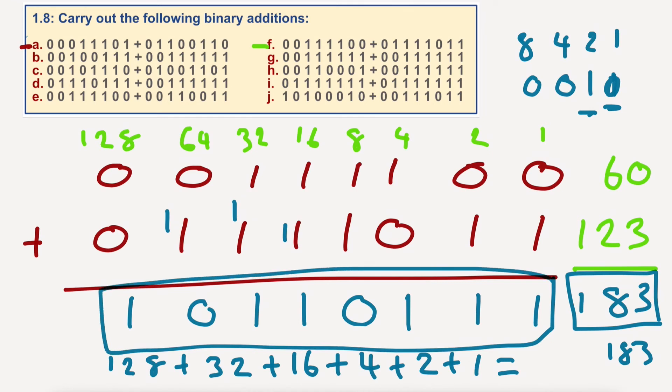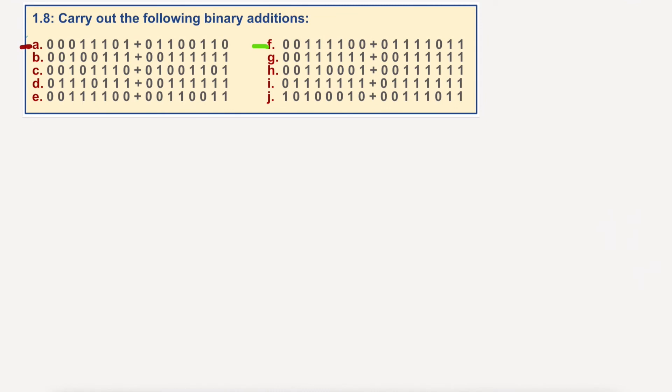Okay, shall we do one more really quickly? Okay, we'll do J. So, I'm going to go 1, 2, 4, 8, 16, 32, 64, 128.